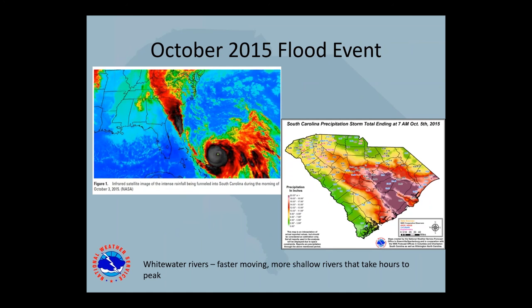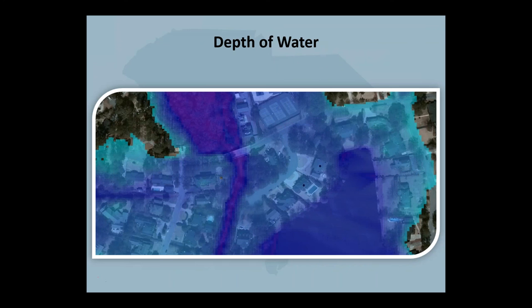It was a large rain event that produced flooding for most of the state. The rivers in the impacted area are whitewater rivers that are fast-moving and only take hours to peak. Some of these flood risk data sets we were able to use after the fact, mainly helping citizens and community officials understand their true level of flood risk. Here is one of those data sets — it's called a depth grid, and it indicates the expected depth of water in a particular area.